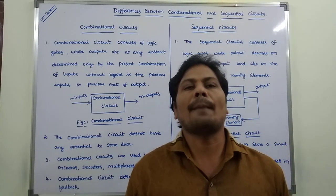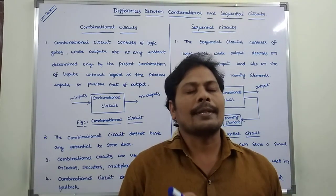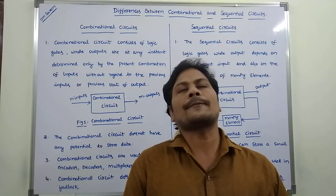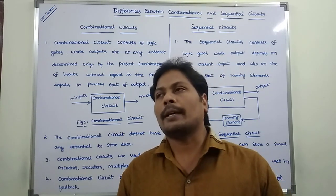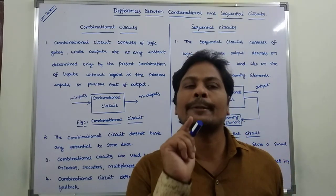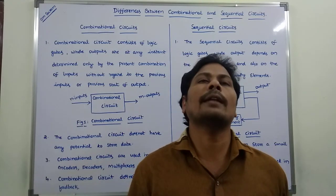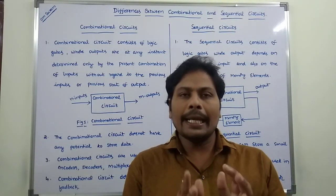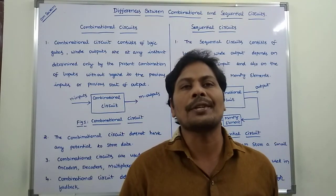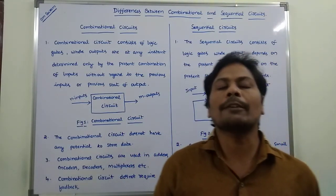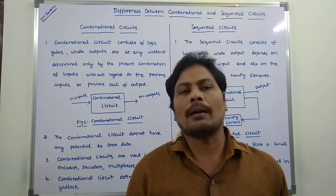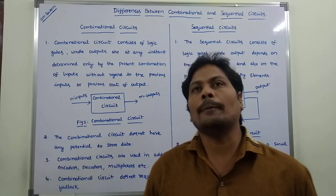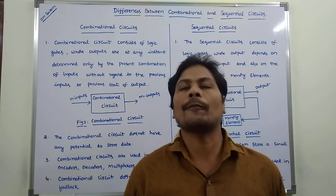The combinational circuit mainly consists of logic gates whose output at any instant of time depends only on the present inputs, not on the previous input, not on the previous output or state. While in the case of sequential circuits, the output at any instant of time depends on the present input and the present state of the system.